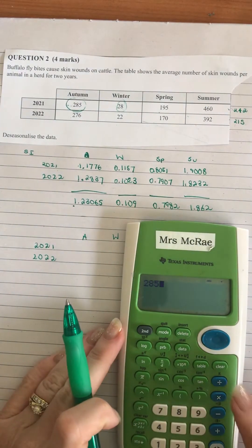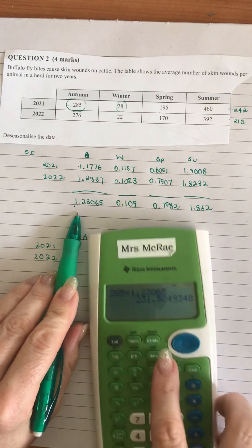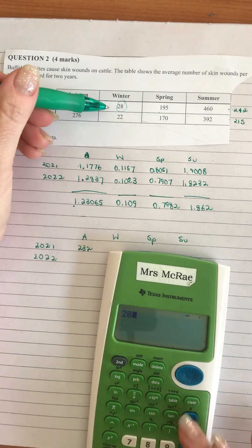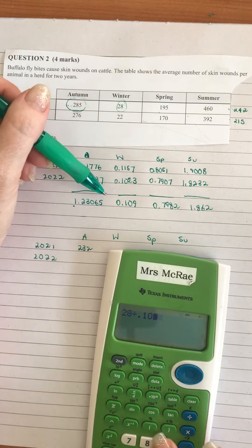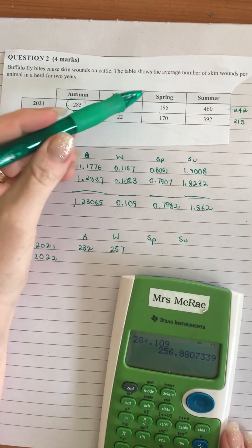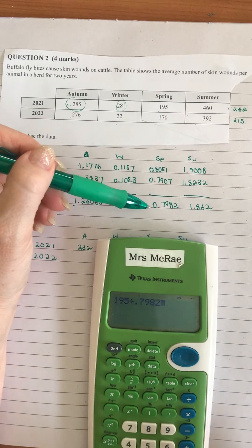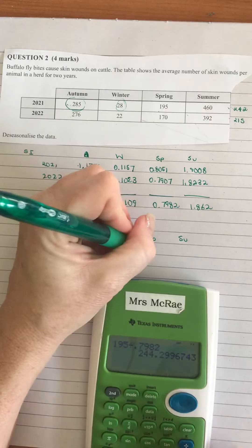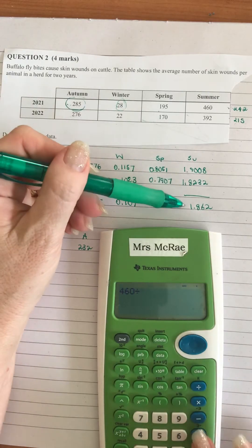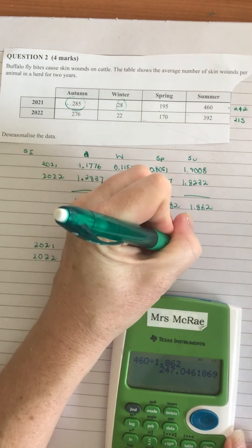We'll grab our 285 and divide that by 1.23065 and we get 231.58, so I'm going to round that to 232. Then I'm going to get my 28 and divide that by 0.109 and that gives me 256.88, so I'll round that to 257. Then I'm going to get my 195 and divide that by 0.7982 and that gives me 244.29, so I'll round that to 244. Then I'll get the 460 and divide that by 1.862 and I get 247.04, so I'm just going to round that to 247.